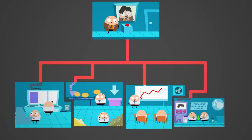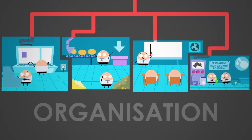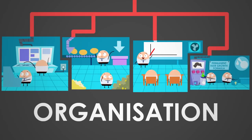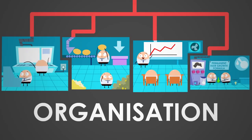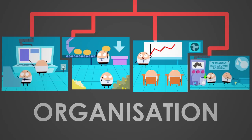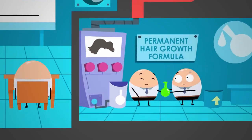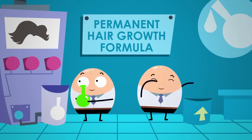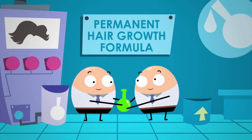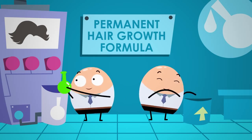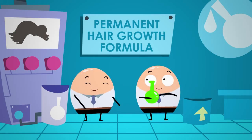We call such a team of people an organization. How does an organization ensure that its wide variety of employees work together in the most effective manner and achieve the best possible results for its stakeholders?